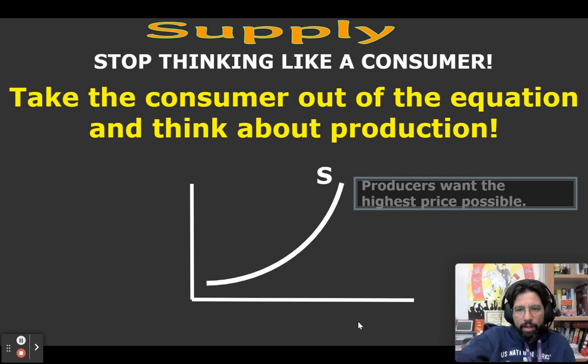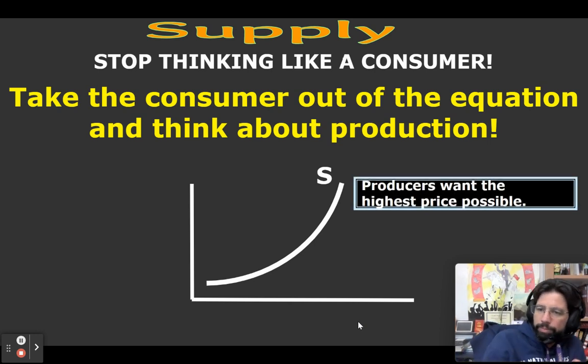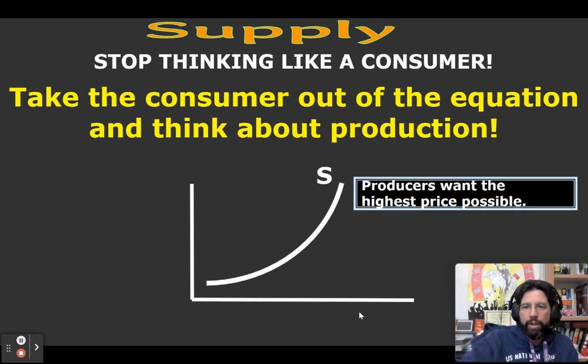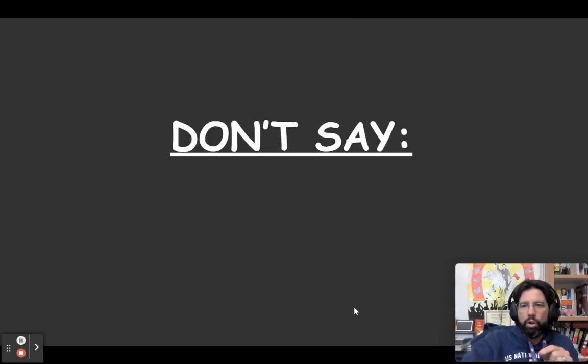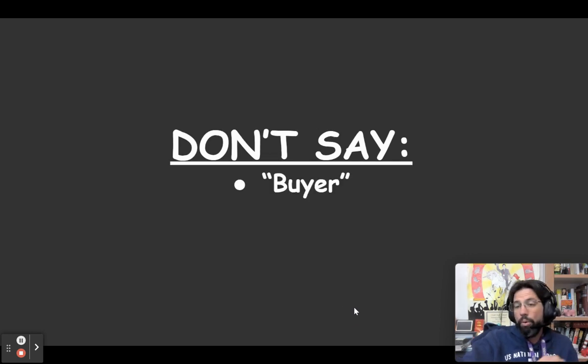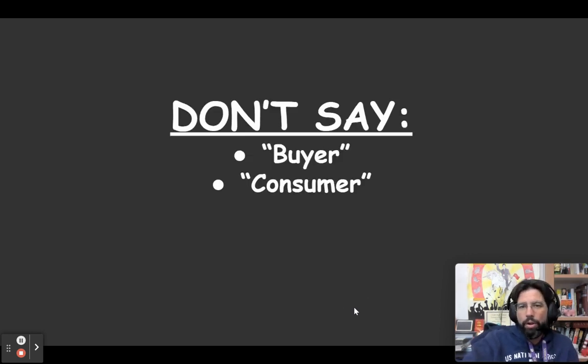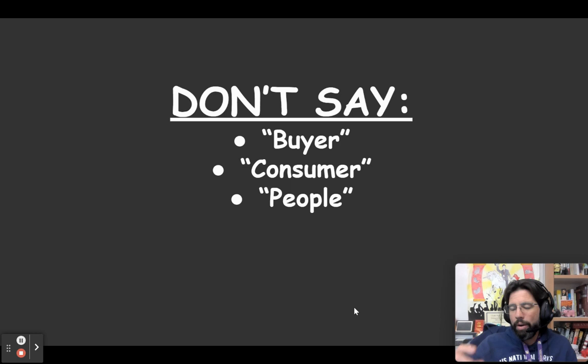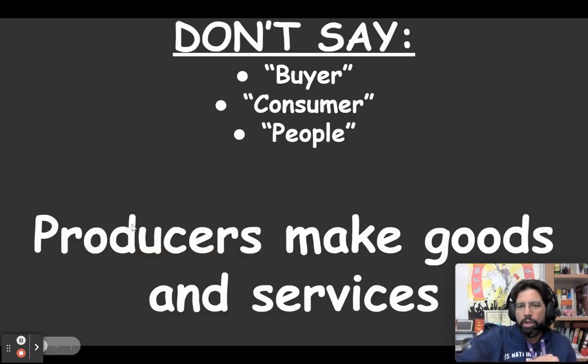Producers, remember, the ultimate goal is the producers want the highest price possible. Never let that leave your skull for this area. Don't say things like 'oh the buyer' or 'oh the consumer' or 'well the people want.' No, get rid of that. It's gone for this section. Now we're dealing with supply and that means producers make goods and services in an attempt to get profit. Keep that number one in your head. We have been programmed to identify low prices as good, high prices as bad. No. Low prices are good for consumers, high prices are good for producers.